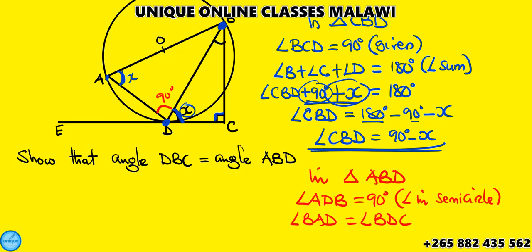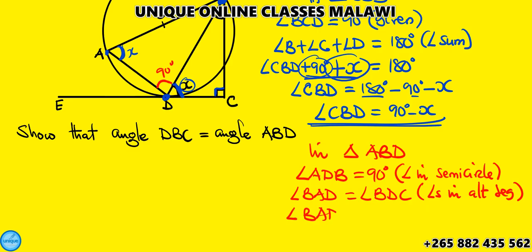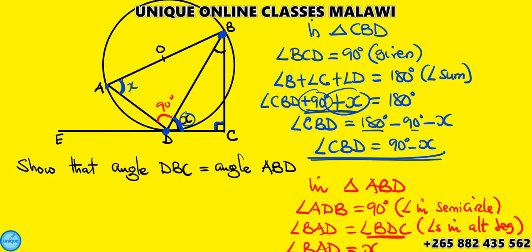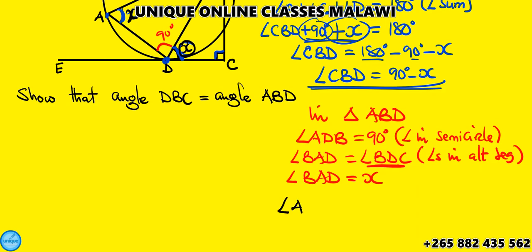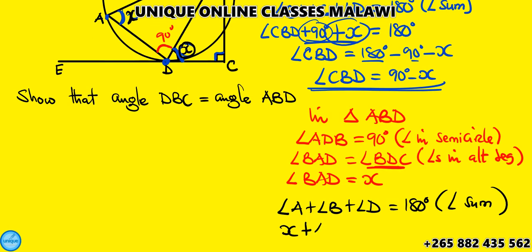Angle BAD equals angle BDC by angles in alternate segment. So angle BAD is equal to angle BDC, which equals x. In the same triangle ABD, angle A plus angle B plus angle D equals 180 degrees by angle sum in triangle. So x plus angle ABD plus 90 equals 180.